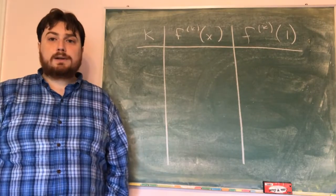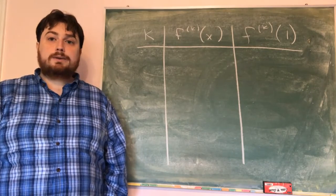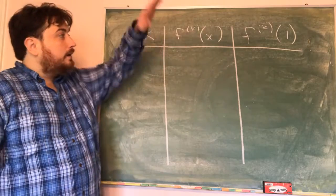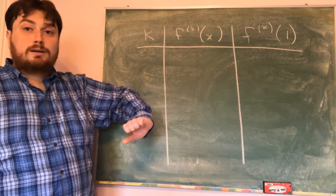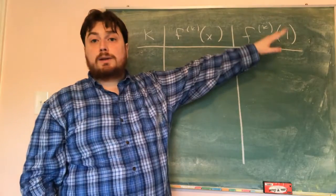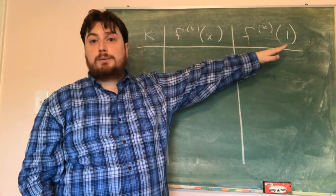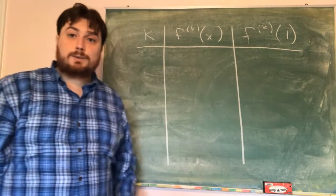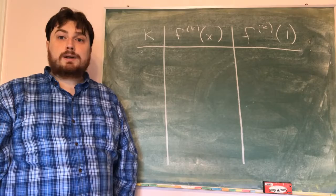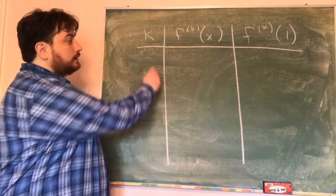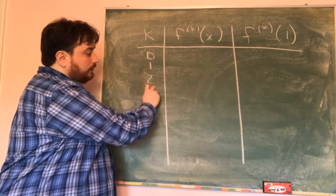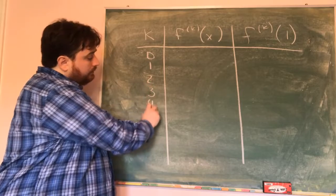In order to help myself out, I'm going to make a table. For different k's, I'm going to find the k-th derivative as a function of x, and I'm going to find the k-th derivative at the center point, which in this case is 1. I'll write these out so I can find a nice pattern, letting k be 0, 1, 2, 3, 4.